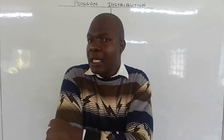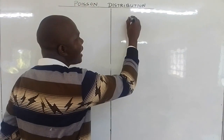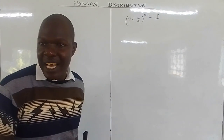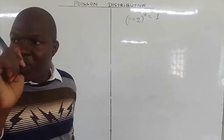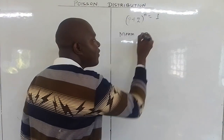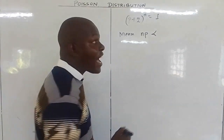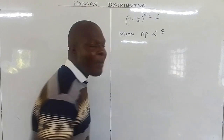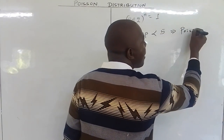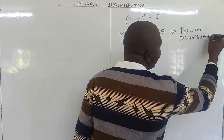Remember, the range of a probability measure is 1. When defining a binomial distribution, P plus Q equals 1. Now, in a Poisson distribution, when the mean of a binomial distribution, NP, is less than 5, then that binomial distribution can be approximated by a Poisson distribution.